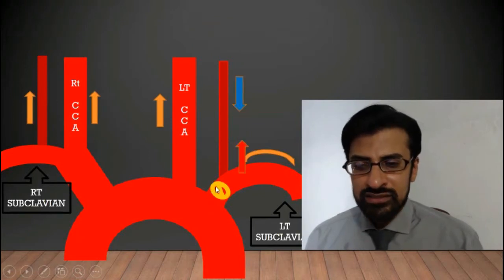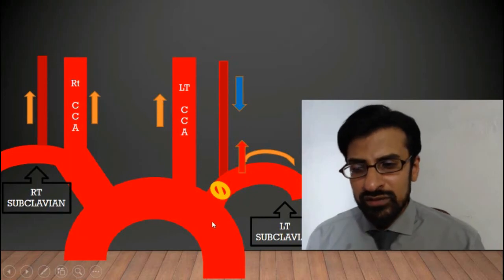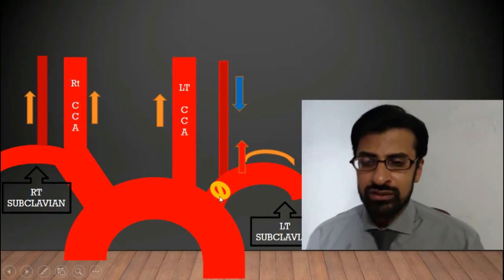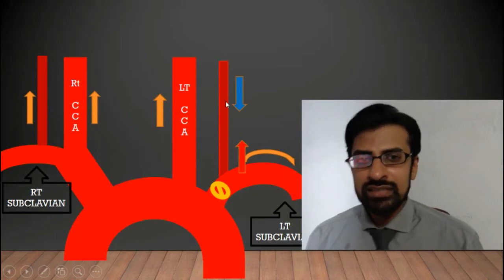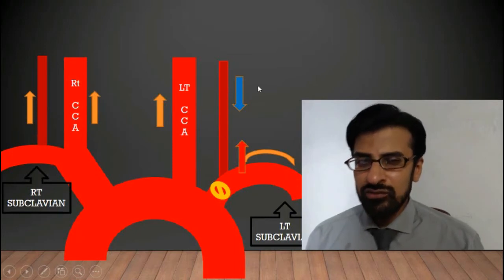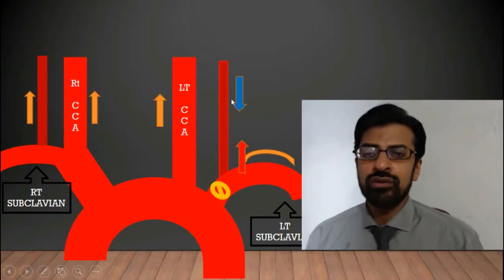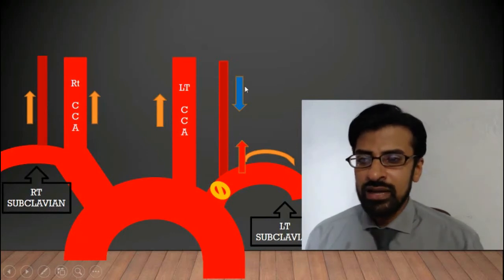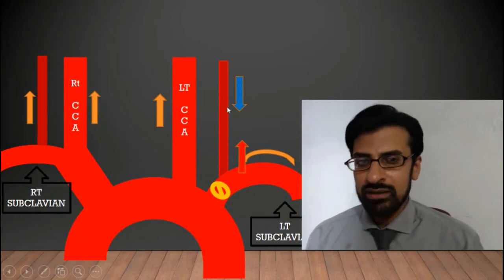But when there is severe stenosis in the proximal part of the subclavian artery, the volume of blood that enters from the arch of the aorta into the subclavian artery is reduced. Blood flow and pushing pressure within the vertebral artery is also reduced, as a result of which blood starts moving to and fro within the vertebral artery and doesn't reach the brain properly.